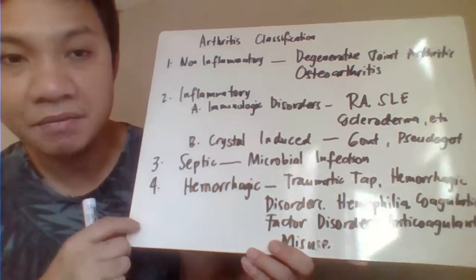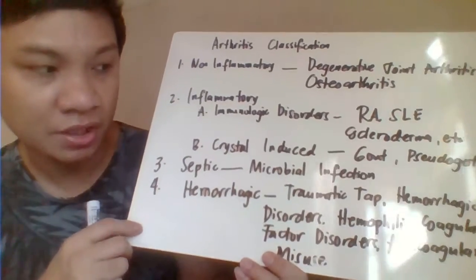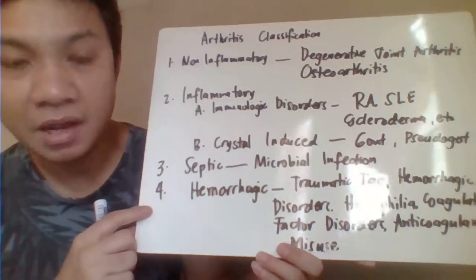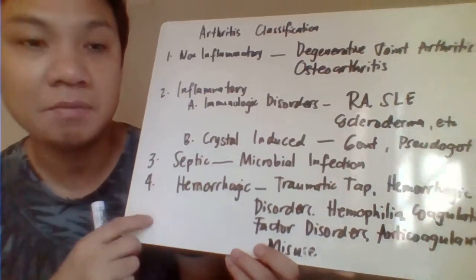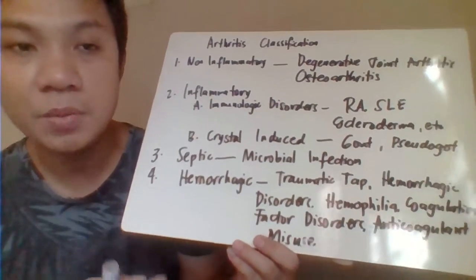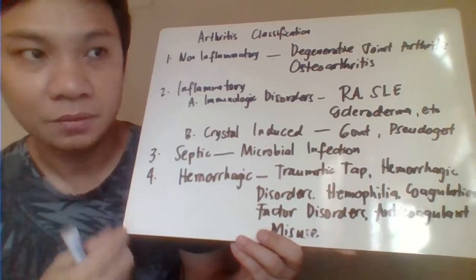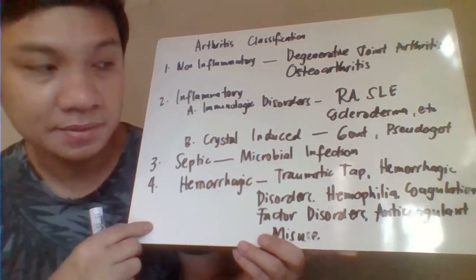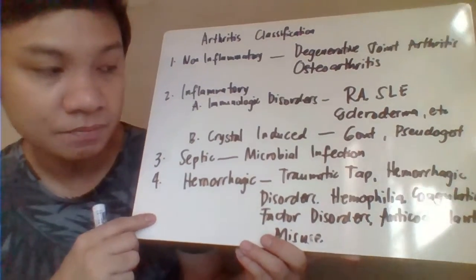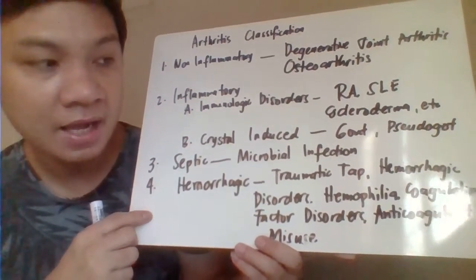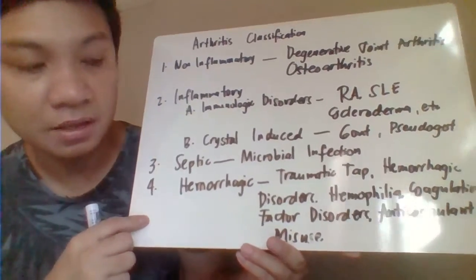The third type is septic arthritis, related to bacterial infection. The fourth is hemorrhagic arthritis, which presents with a bloody red specimen and is related to either traumatic puncture during arthrocentesis or hemorrhagic disorders such as hemophilia, coagulation factor disorders, and anticoagulant issues.